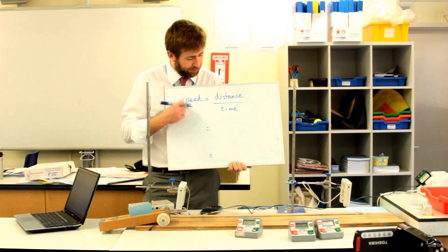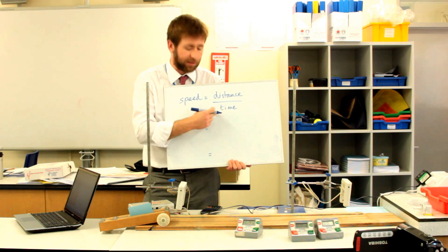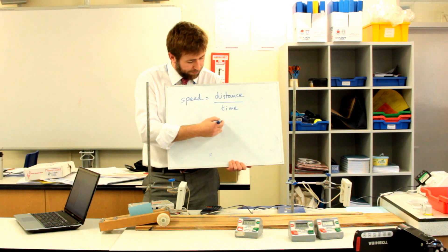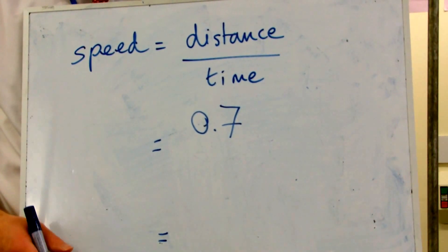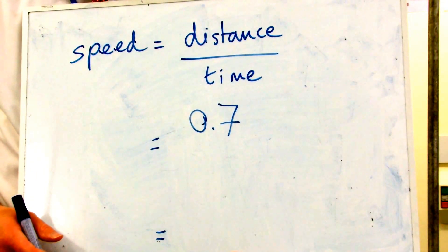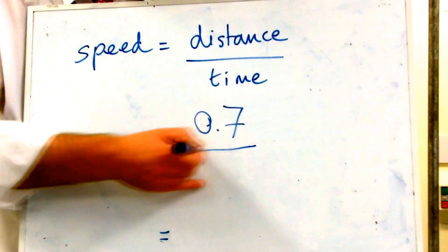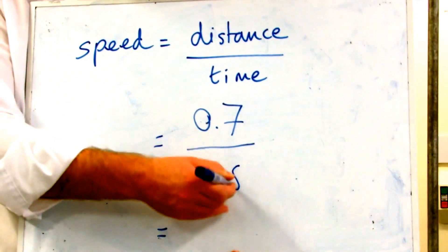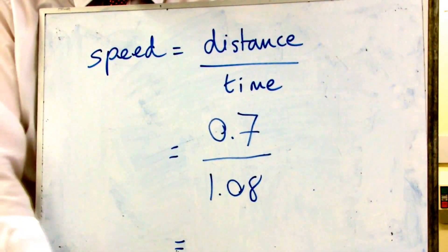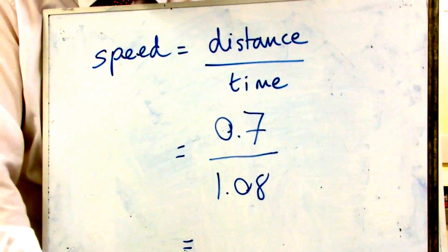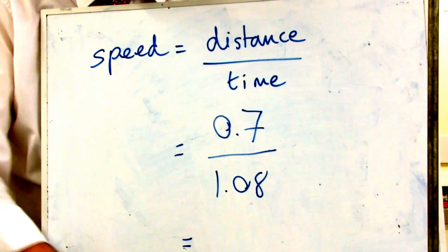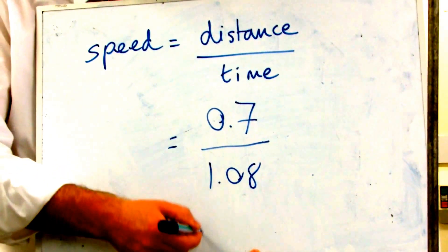Same equation. Speed is distance divided by time. This time 0.7 meters because there's 100 centimeters in every meter, so 70 centimeters is 0.7 meter. Divide that by 1.08 seconds, and our speed is 0.648.